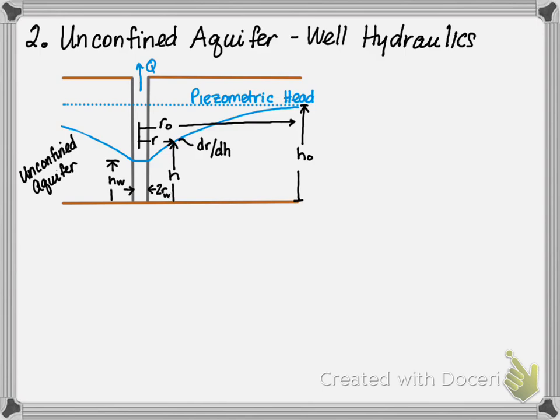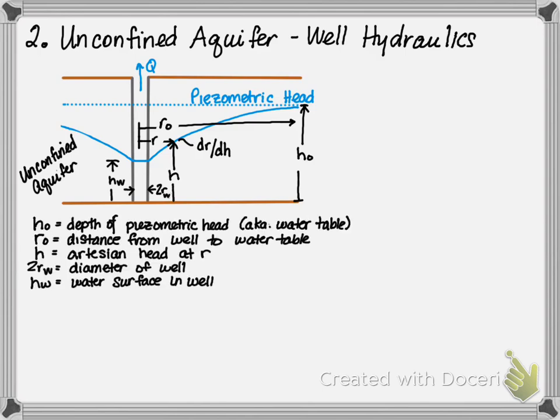The various parameters within the schematic: H0 is the depth of the pieziometric head, R0 is the distance from the well to the water table, H is the artesian head at a distance R, 2RW is the well diameter, and HW is the water surface within the well.